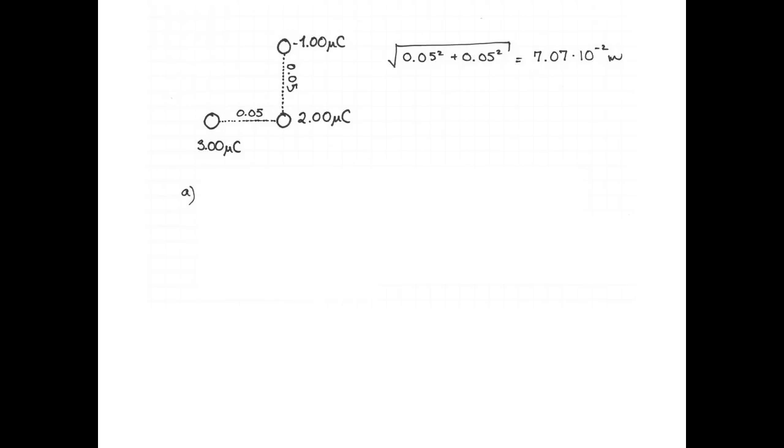First things first, here's the picture of the situation with the 1, 2, and 3 charges. I've calculated also the distance between the 3 microcoulomb and the negative 1 microcoulomb just by using the Pythagorean theorem, and that's 7.07 centimeters.